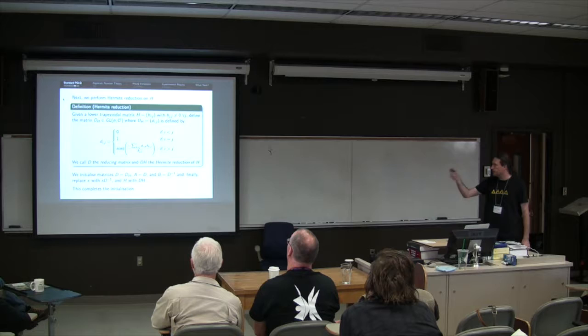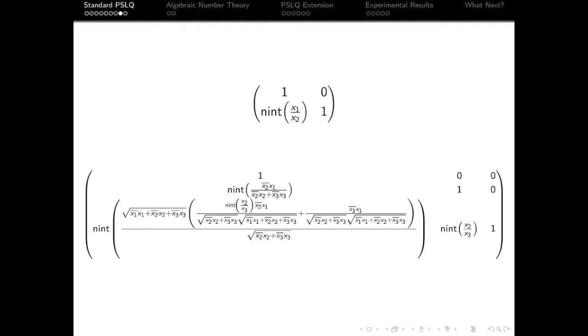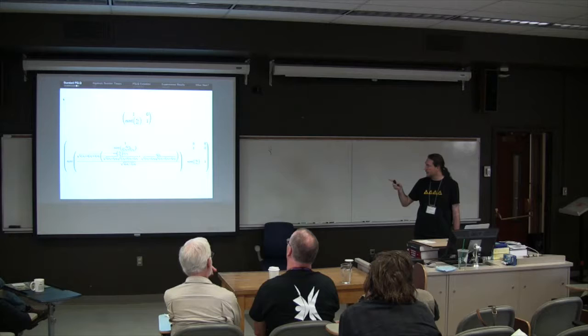So just for reference, again, these get big quickly, but this is the case of the reducing matrix in the case of n equals two and n equals three.